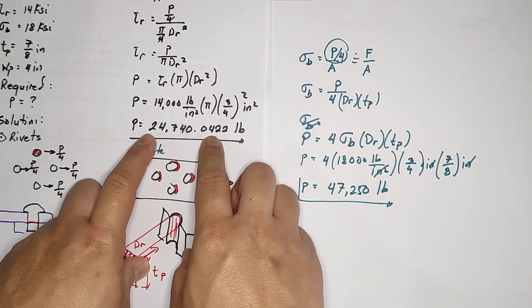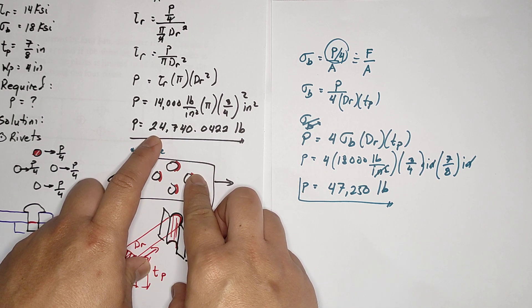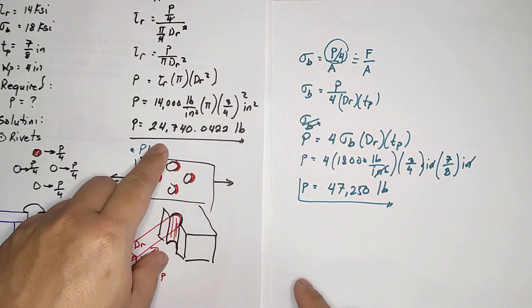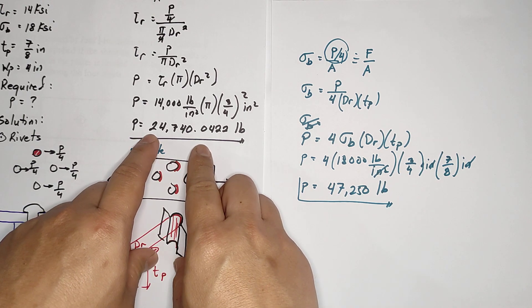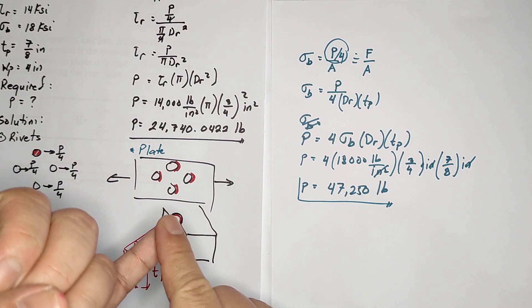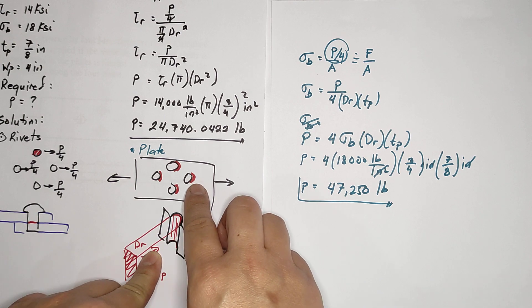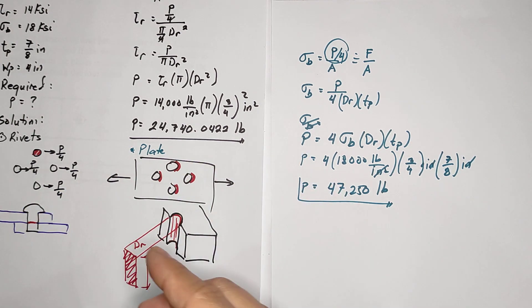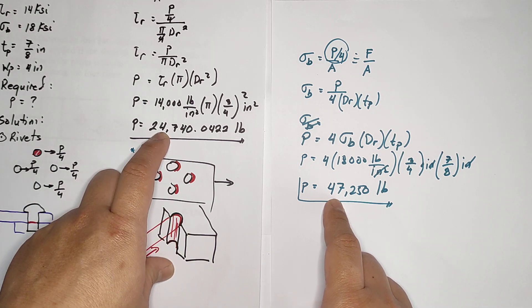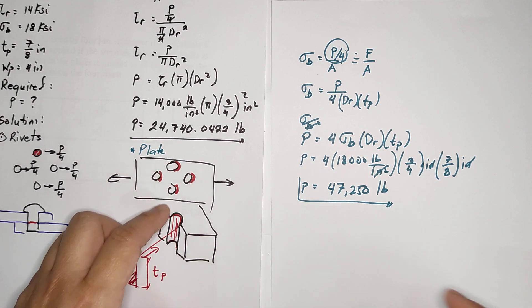The limiting force should be based on shearing. If I put 24,000 pounds in the whole system, the rivets will not shear and the plate will be safe. But if I use 47,000, you're okay with the plate - it will not have failure in bearing - but before you reach 47,000, at 24,000 the rivets break. So this is the combination of bearing and shear stress.